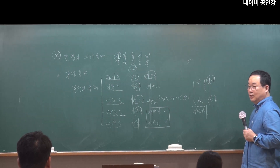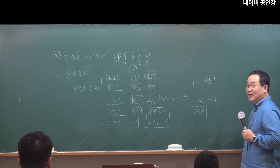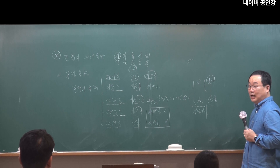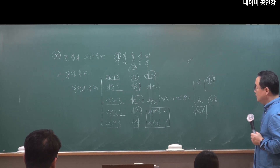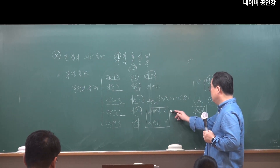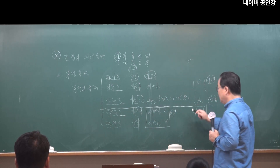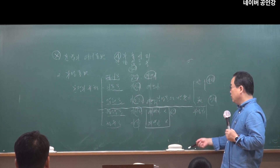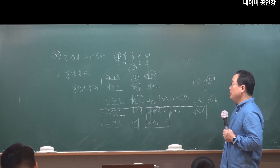'안 가지 말자'도 말이 안 되고, '가지 안 차'도 말이 안 됩니다. 기억할 것은 '안' 부정문은 명령문과 청유문에 대해서는 안 된다는 것입니다. 즉 '안'을 통해서 명령문이나 청유문의 부정문을 만들 수 없습니다.